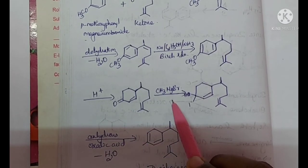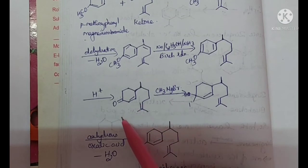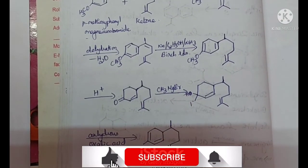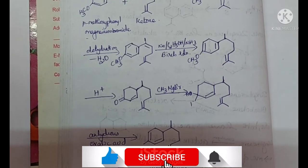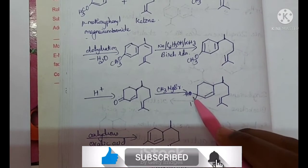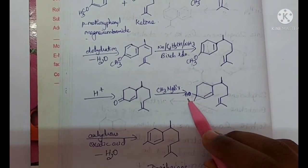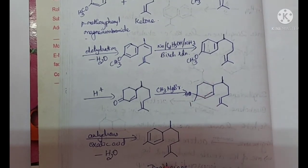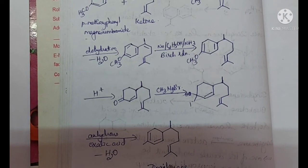This ketone is further treated with Grignard reagent, and this Grignard reagent converts a ketone to alcohol. This alcohol on treatment with anhydrous oxalic acid removes the molecule of water—that is OH from this carbon and hydrogen from this carbon—to form a double bond here. So this is the final structure of Zingiberine.